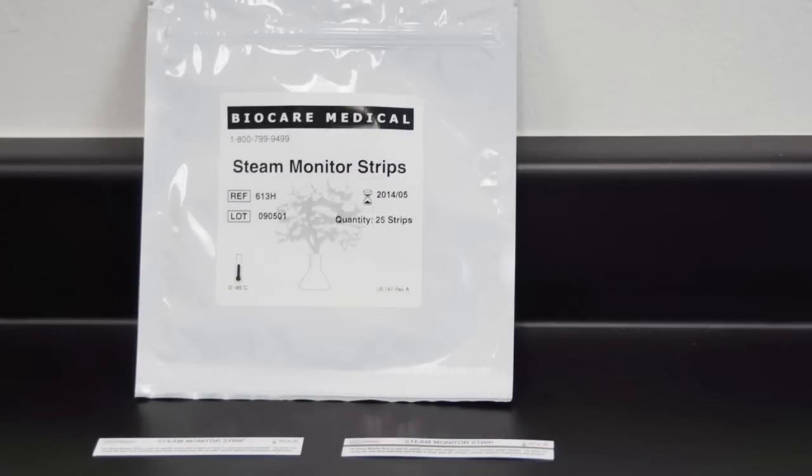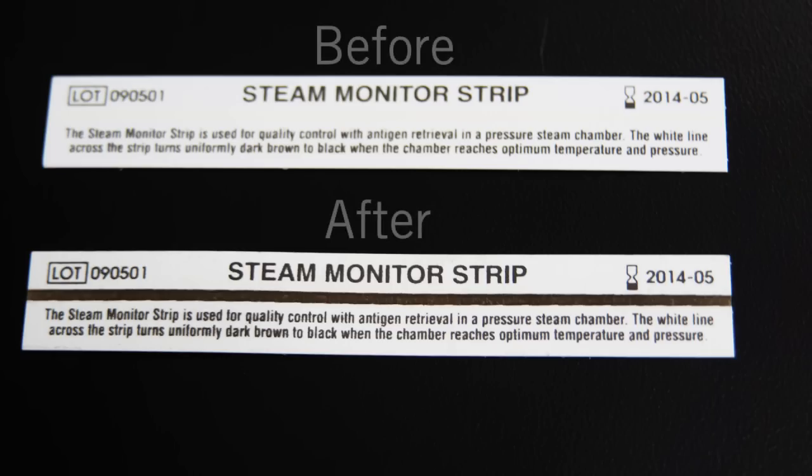In addition, the use of steam monitor strips with runs at 110 degrees Celsius provides confirmation that appropriate heat and pressure levels were reached inside the unit.